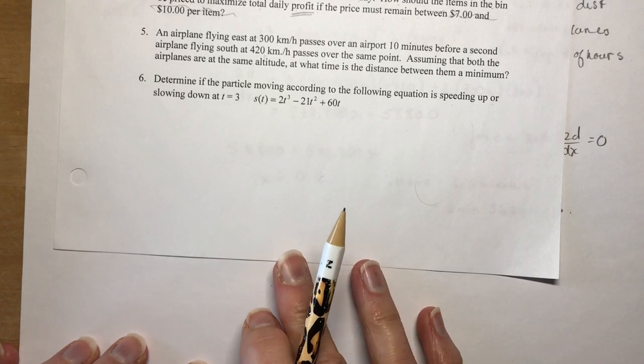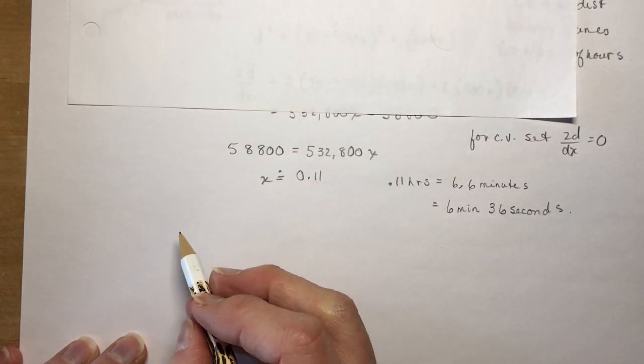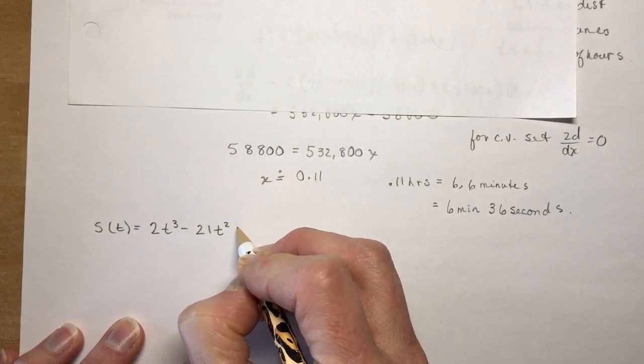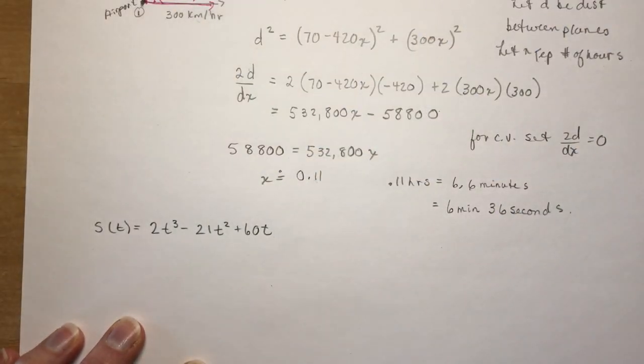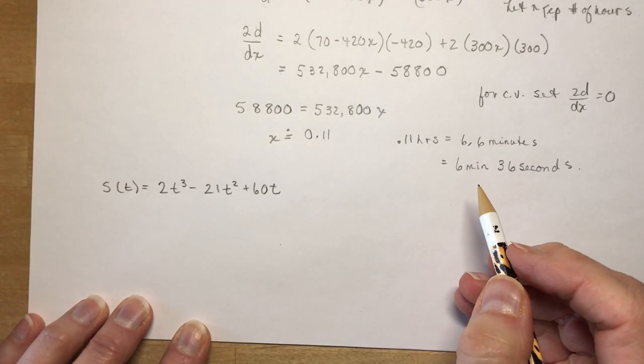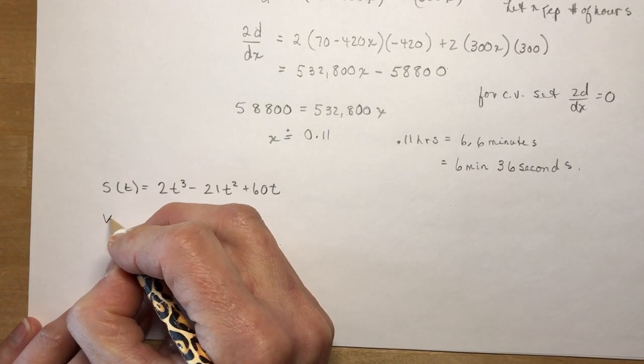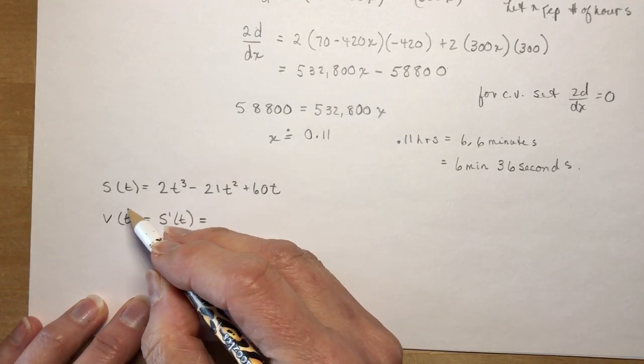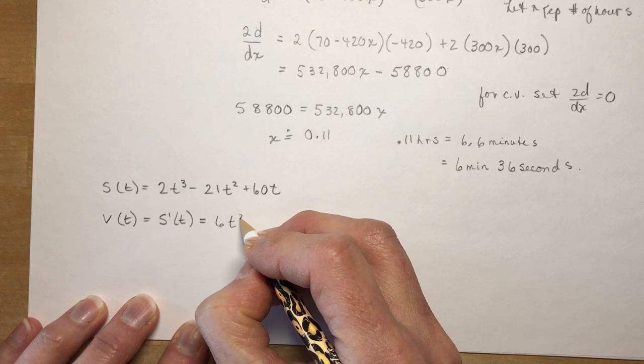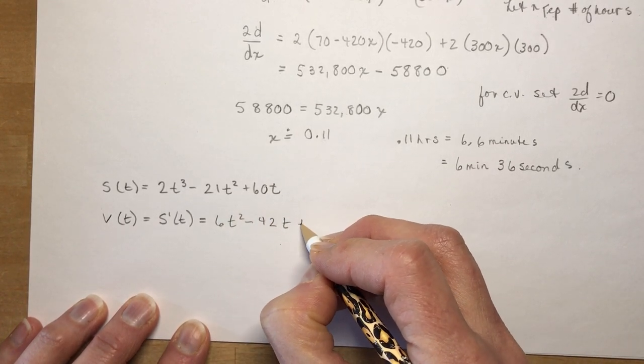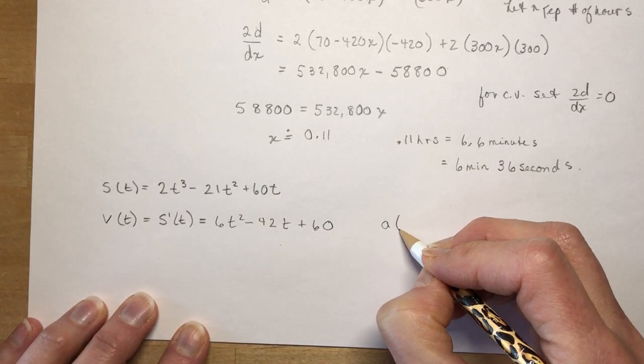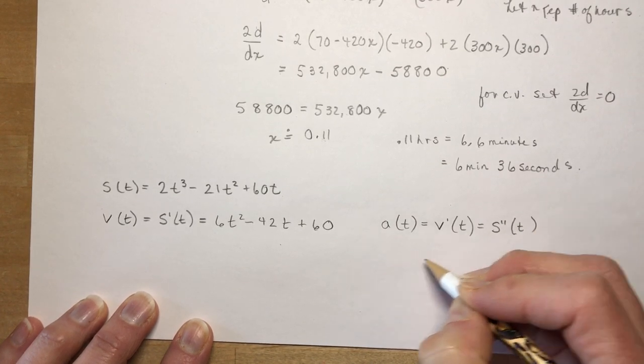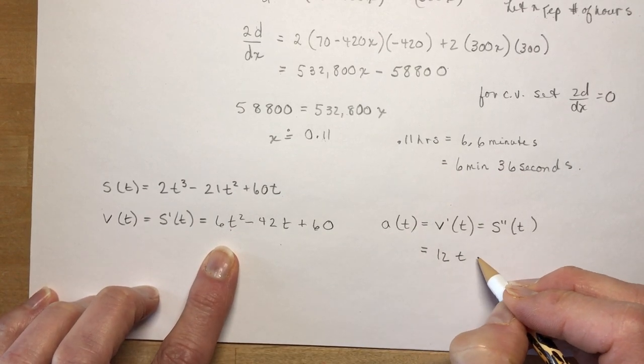This is a question I always ask my students because believe it or not a lot of them would get it wrong and it's really a very simple question. So let's write out the position function, so you get 2t³ minus 21t² plus 60t. So remember that the derivative of the position function gives you the velocity, and the derivative of the velocity will give you acceleration. So v(t) is equal to, that's s'(t), I'll write that out, you probably wouldn't need to write that because it's probably assumed that you know that. So 3 times 2 is 6t² minus 42t plus 60. Okay and what is the acceleration? The acceleration at time t is equal to the derivative of the velocity which is equal to the second derivative of the position function and in this case the derivative of this is going to give you 12t minus 42.